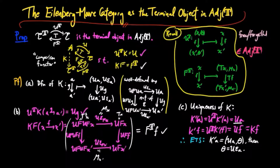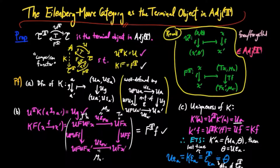This is where the result of the previous section is used. We have U(Epsilon_A) equal to K(Epsilon_A), and from last time this equals Epsilon^T_{K'(A)}, which equals theta by the definition of the counit for the Eilenberg-Moore adjoint situation. Therefore, the T-action is also determined. So K must equal K', and that completes the proof.